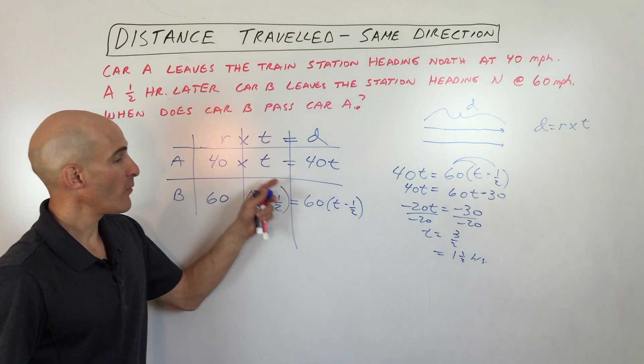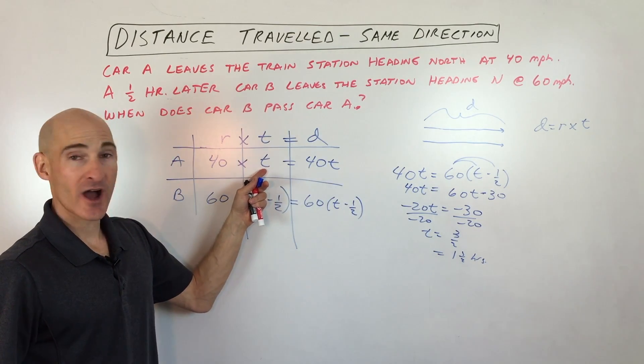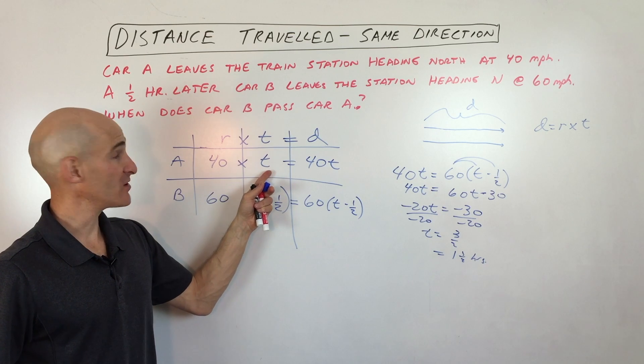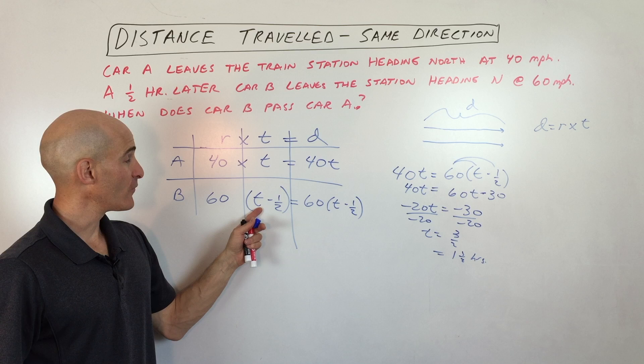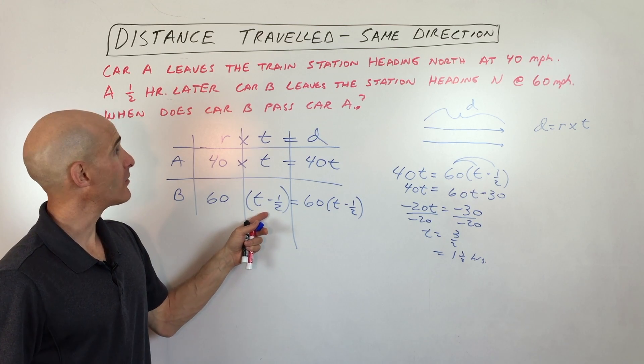So when we go back, one and a half hours, that's how long car A was traveling for. See, T equals one and a half. But car B has only been traveling for one and a half minus a half, one hour.